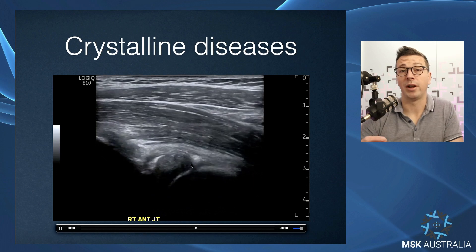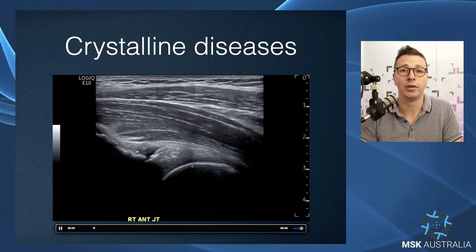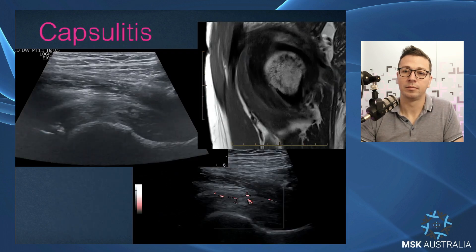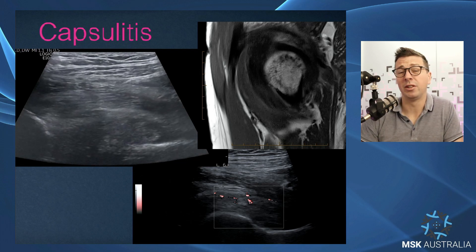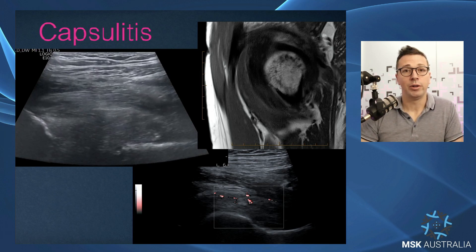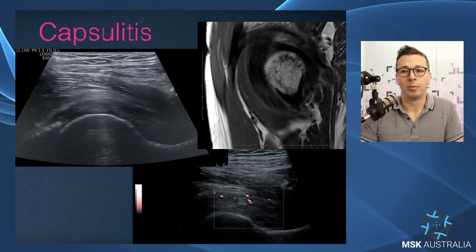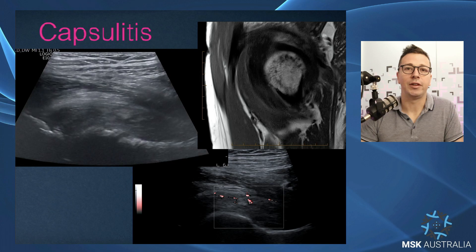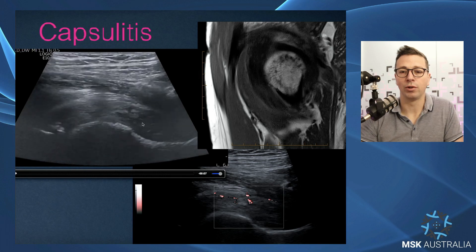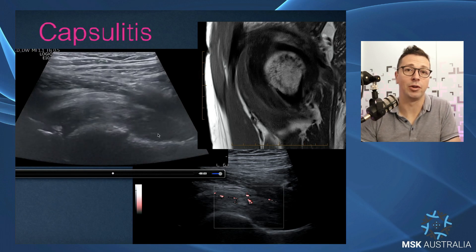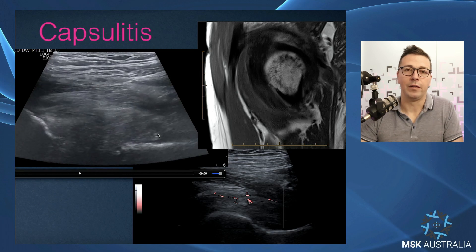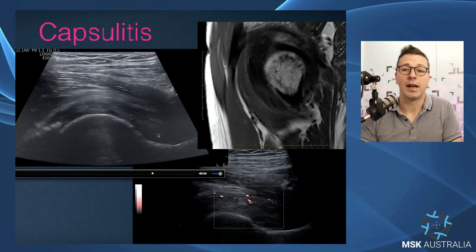Other things you can see within the joint — just like any other joint — is crystalline disease, crystalline arthropathy: calcium pyrophosphate deposition disease. You can also just get a hip joint capsulitis, similar to adhesive capsulitis or frozen shoulder. The same phenomenon can exist in the hip where you get a stiff, painful hip without chondral loss. Sonographically we see the joint is grossly thick and grossly inflamed. In this setting, check there's no underlying inflammatory or rheumatological component.